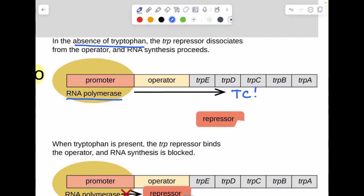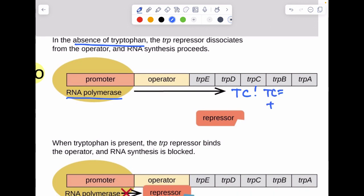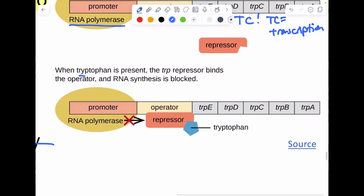If there's no tryptophan, RNA polymerase will bind to the promoter and we get expression. TC means transcription. If there is tryptophan present, however, what tryptophan is going to do is activate a protein that's going to block transcription.